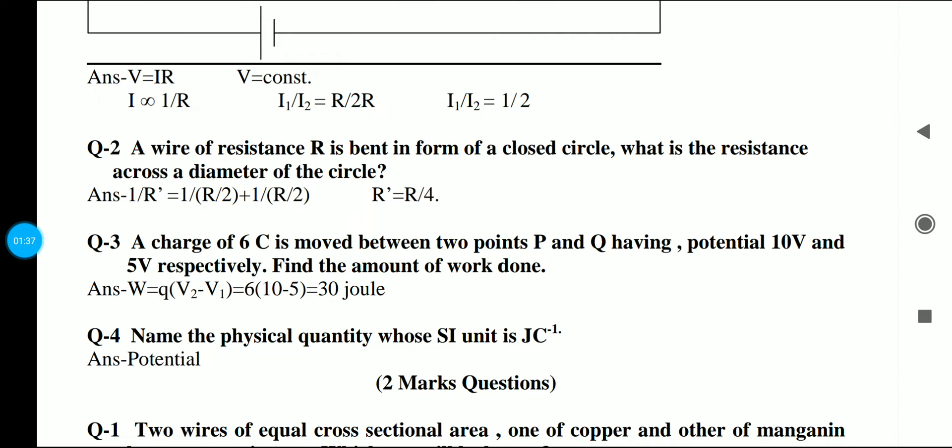Second question: A wire of resistance R is bent in the form of a closed circle. What is the resistance across the diameter of the circle? When we do calculations here, the original resistance becomes R by 4. You can find this solution, because it's very difficult to orally tell you the numerical.